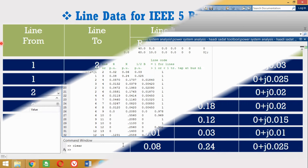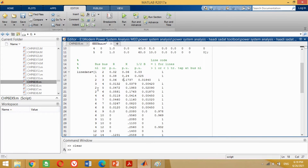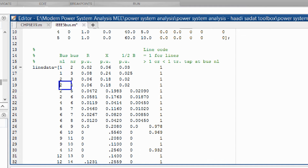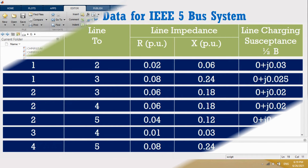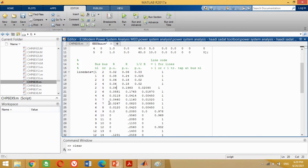Similarly, the transmission lines from bus 2 to bus 3 and bus 2 to bus 4 both have resistance 0.06, reactance 0.18, and susceptance 0.02. Put the values from line 2 to 3 and line 2 to 4 as shown. The transmission line from bus 2 to bus 5 has resistance 0.01, reactance 0.03, and susceptance 0.015. Put the values from line 2 to 5 as shown.